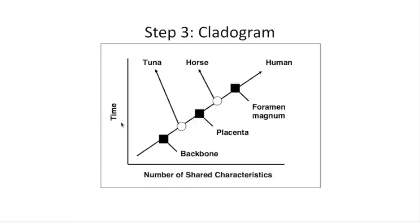Up the side of the graph is a time axis. Based on the theory of evolution, the more complex an organism is, the longer it took to evolve. The human is the most complex here because it has the largest number of characteristics, so it took the longest to evolve. The tuna, being the simplest, would have evolved first in this scenario.